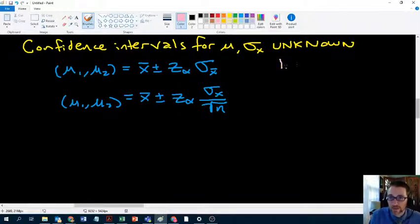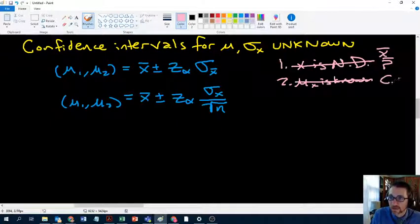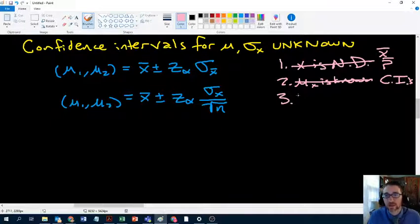We had three terrible assumptions. One is that x is normally distributed. That's bad. We got rid of that by moving on to sampling, started dealing with x bar and p bar. The second was mu is known, and we got rid of that by looking at confidence intervals. And we'll look at another application of it later. The last one is that sigma x is known.